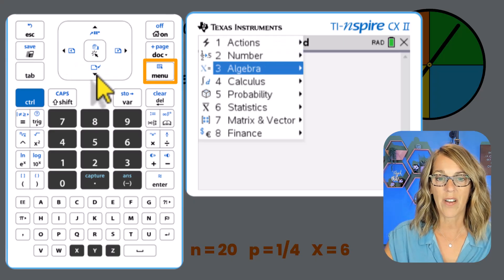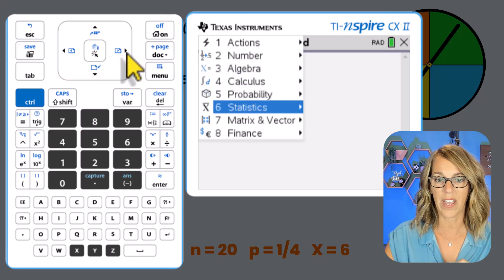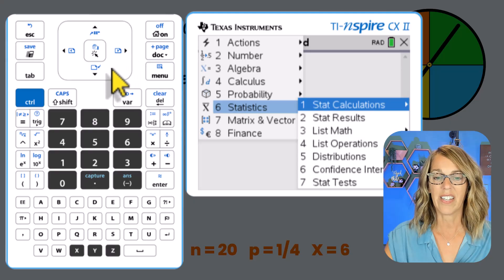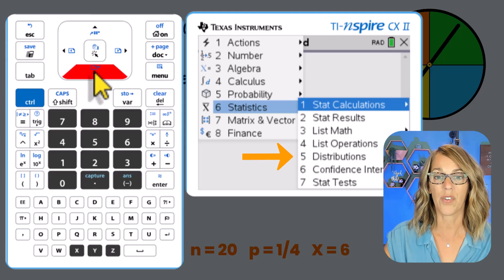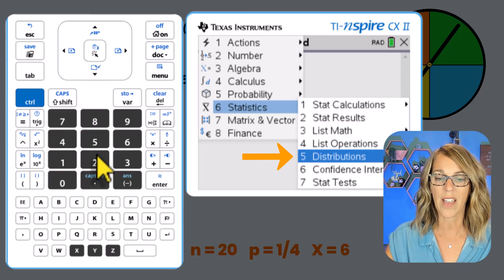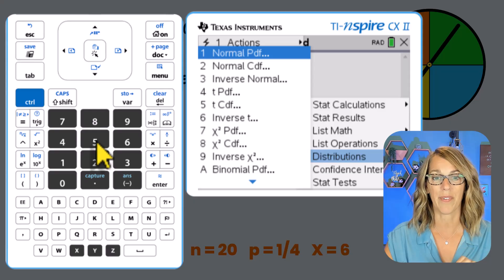So scrolling down here under statistics, if I go ahead and right arrow, I see that distributions are number five. So you can either arrow down to number five, or you can just hit the number five.